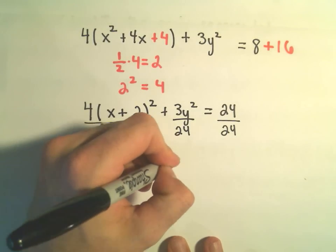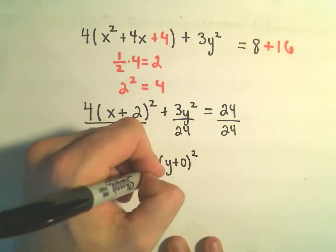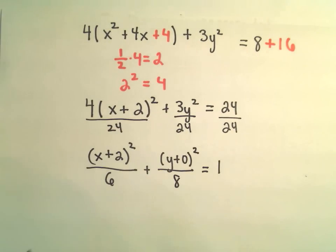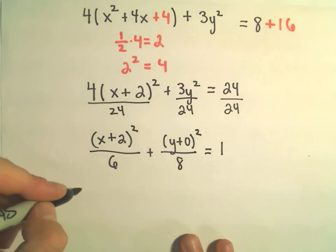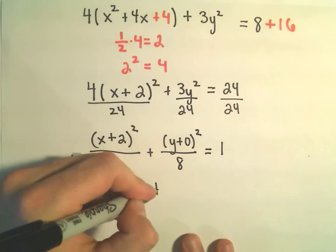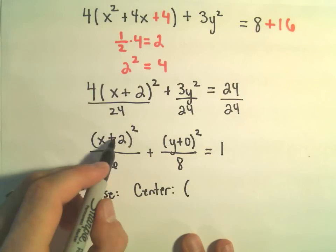We could write this as y plus 0 squared. 3 over 24 reduces to 1 eighth. And then on the right side, we have positive 1. So this is going to represent an ellipse, and the center is going to be at the point.